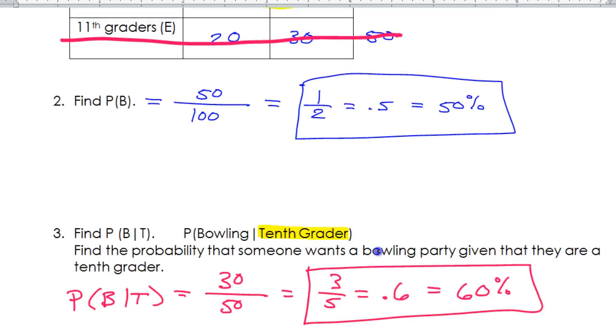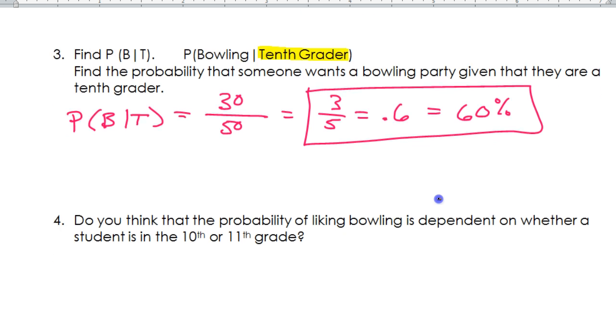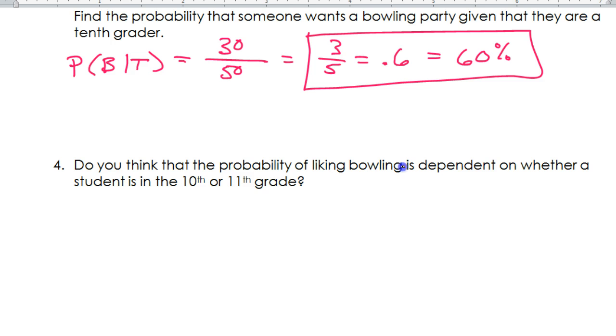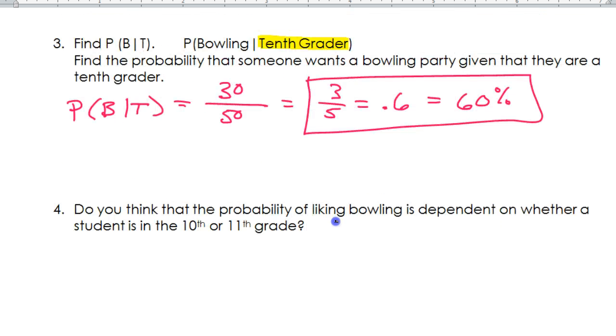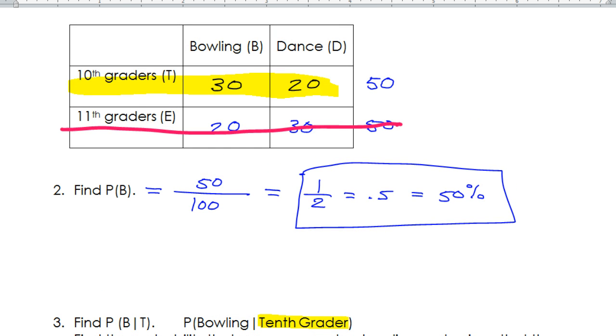You can see that that's very different than the probability. When we just asked what's the probability in general, we got 50%. But if we said what's the probability given that we're dealing with 10th graders, then it's become 60%. So do you think that the probability of liking bowling is dependent on whether students are in the 10th or 11th grade? Well, obviously, the probability is going to be different, because of the 10th graders, 30 out of 50 of them wanted bowling. But 11th graders, only 20 out of 50.